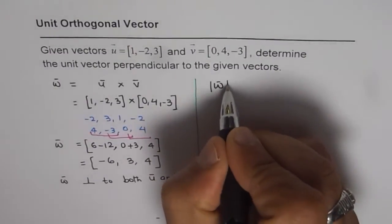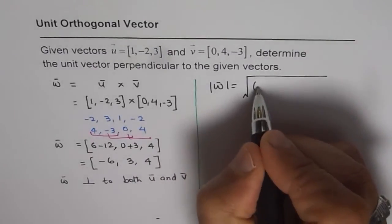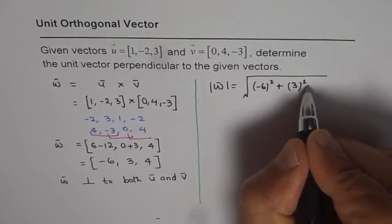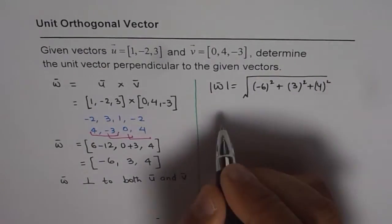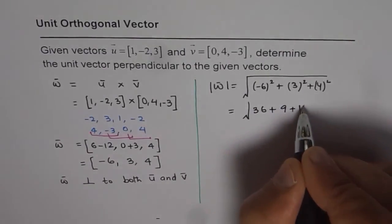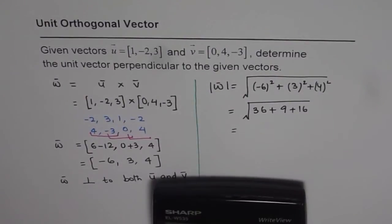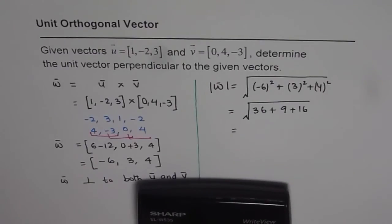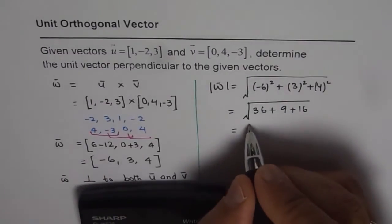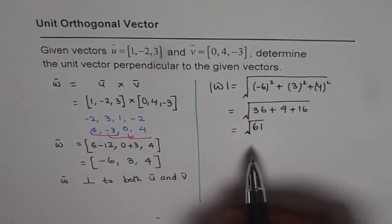Now let us find the magnitude of vector w. The magnitude will be the square root of (minus 6) squared plus 3 squared plus 4 squared, which gives the square root of 36 plus 9 plus 16. Using the calculator: 36 plus 9 plus 16 equals 61, and the square root of 61 stays as square root of 61. So the magnitude of vector w is square root of 61.